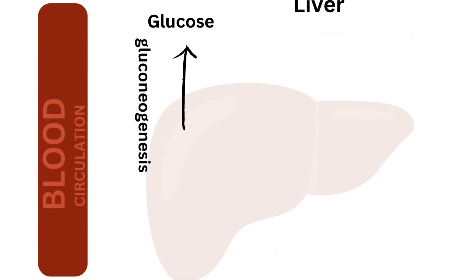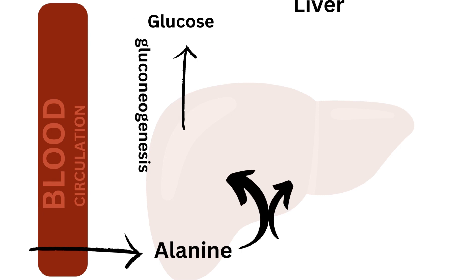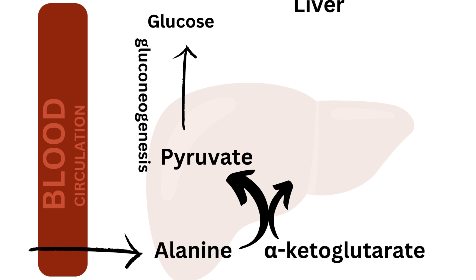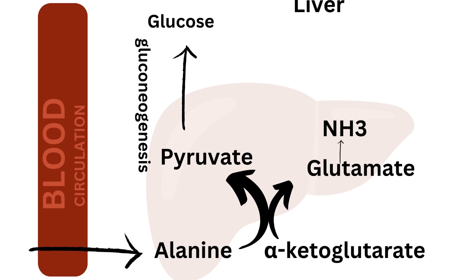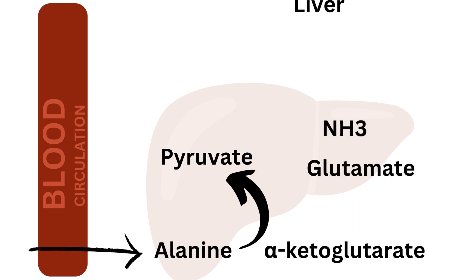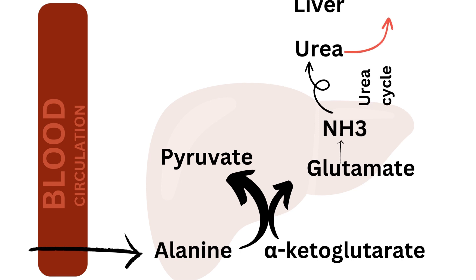Once alanine reaches the liver, it undergoes transamination, where it is converted back into pyruvate, releasing ammonia in the process. Alpha-ketoglutarate is aminated into glutamate, from where ammonia is liberated. In the liver, removal of ammonia is accomplished by the production of urea via the urea cycle, which is then secreted in urine.